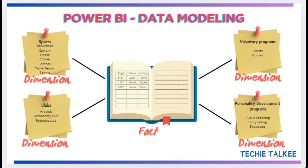In this example, we have got only one fact table that is getting mapped with four dimension tables. So we call this schema to be a star schema because it is set to represent the shape of a star.